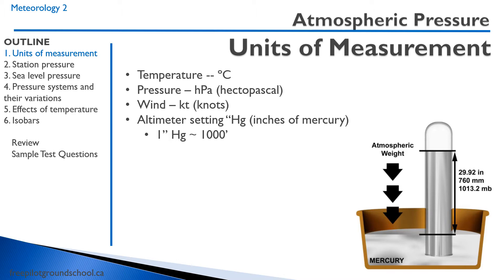Here is how a mercury barometer looks like — classically, a bath of mercury with a tube that has a vacuum at the top. Changing atmospheric pressure causes the mercury to move up and down the tube. The standard would be 29.92 inches — that's how high the mercury would rise in this tube.